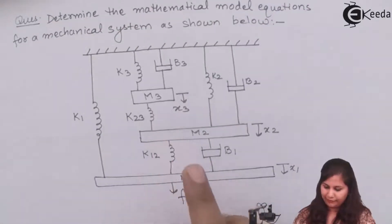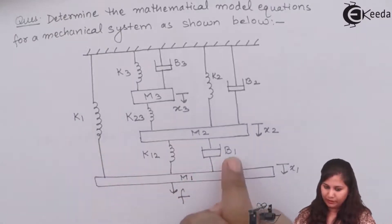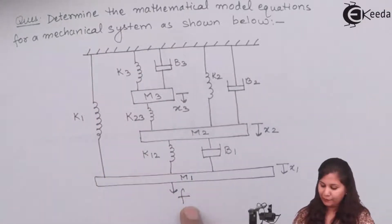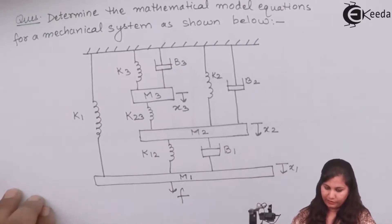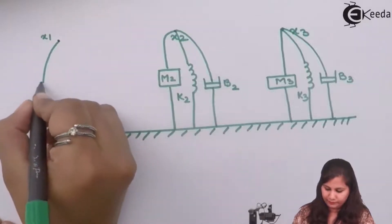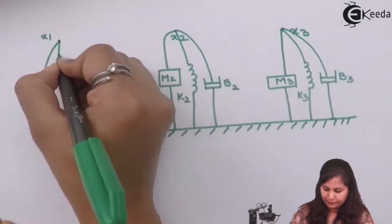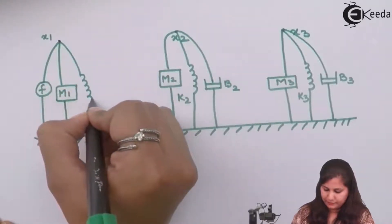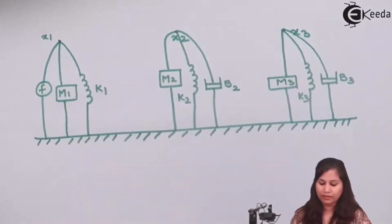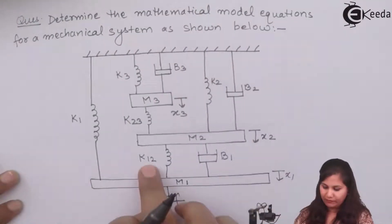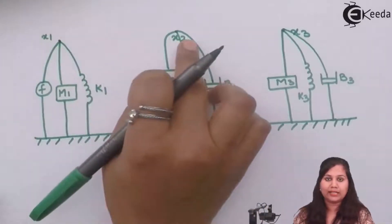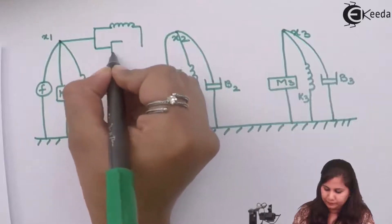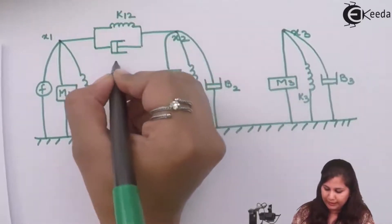For x1 and the reference line we have m1 and k1. Note that b1 and k12 are connected between m2 and x1, so only m1 and k1 connect to the reference line. The external force f also acts on x1. Between nodes x1 and x2, we draw the parallel combination of spring k12 and damper b1.